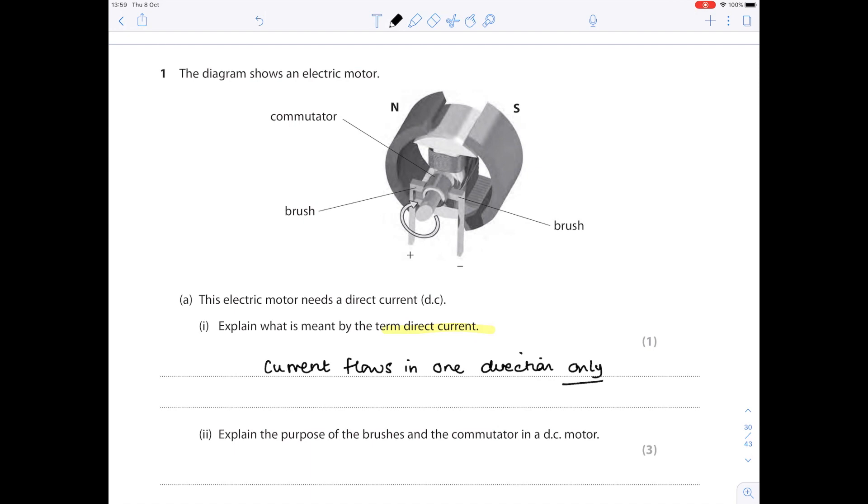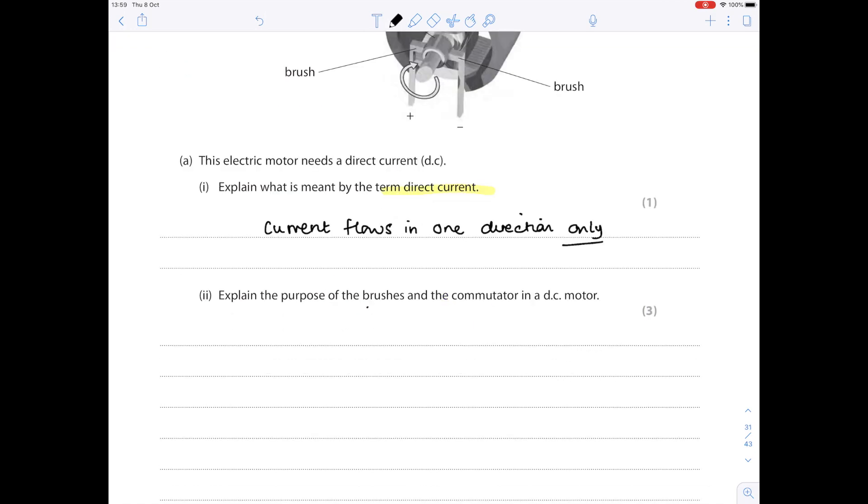Explain the purpose of the brushes and the commutator in a direct current motor. Again, something to learn off by heart. First of all, describe the brushes role, and then describe the role of the commutator. So brushes provide a connection to the coil. Then you're going to get the second and third mark for describing the role of the commutator. The commutator reverses the current in the coil every half turn, and really that ensures that the coil continuously rotates.